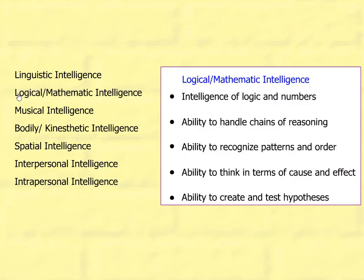Logical or mathematical intelligence is the intelligence of logic and numbers — the ability to handle chains of reasoning, recognize patterns and order, think in terms of cause and effect, and the ability to create and test hypotheses.